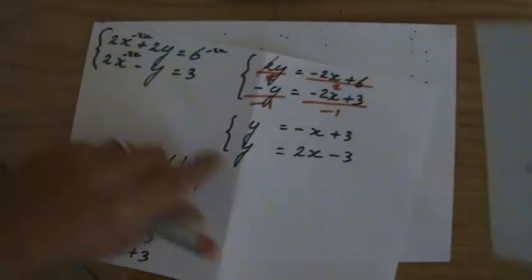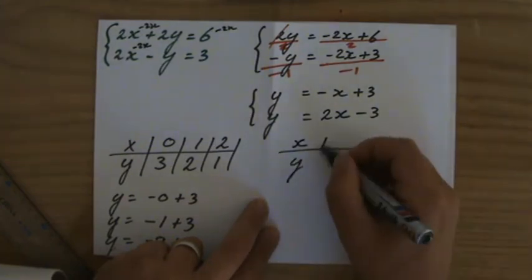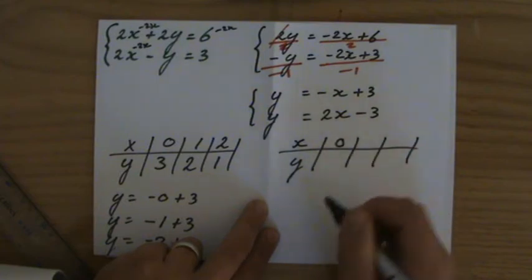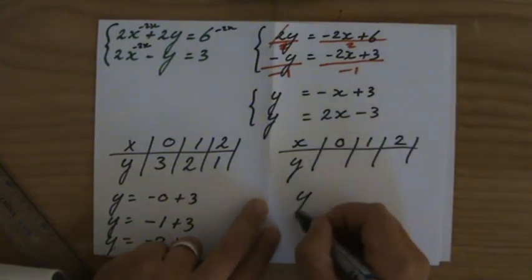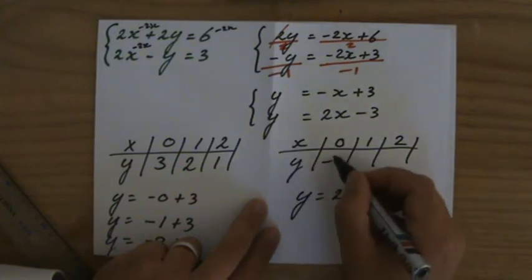I'll do that again for the other line. So I'll make another table, just to organize those three coordinates. 0, 1, and 2. Y is 2 times 0 minus 3, that is minus 3.